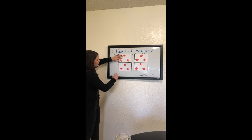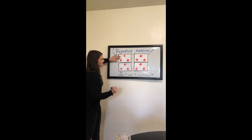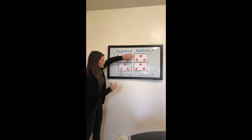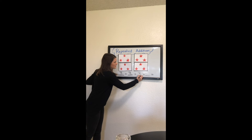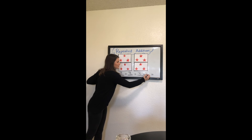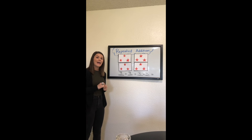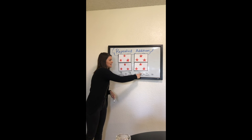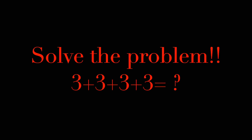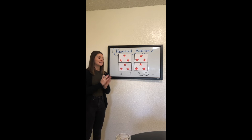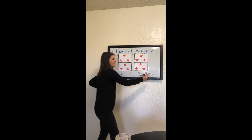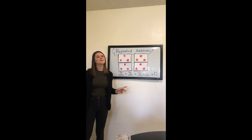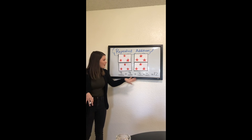First group: one, two, three. Second group: plus one, two, three. Third group: one, two, three. Fourth group: one, two, three. Now I want you to add three plus three plus three plus three and let's see what you get. Three plus three is six, six plus three is nine, and nine plus three is 12. If you got 12, give yourself a pat on the back — you're so smart! You were able to add up all four groups together to get your total.